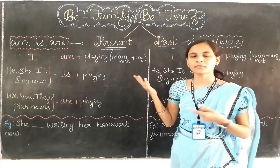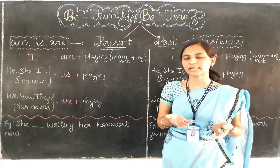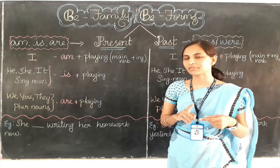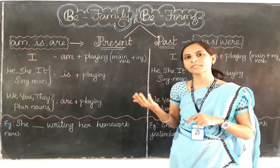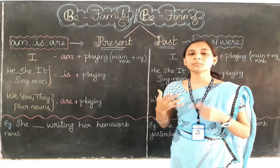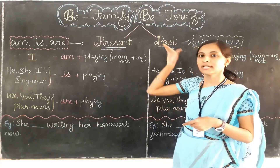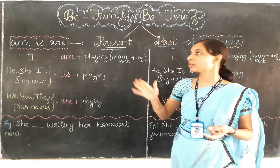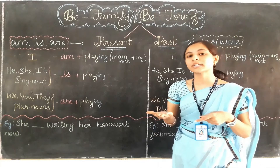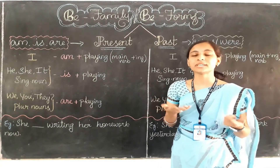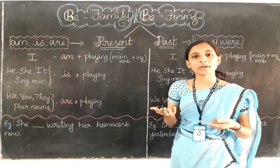So B form verbs, or B family verbs, are referred to the helping verbs only. Helping verbs are also called auxiliary verbs. These auxiliary verbs, these helping verbs, help to complete and help the main verb to form the sentence. It is also used to talk about the time of an action.